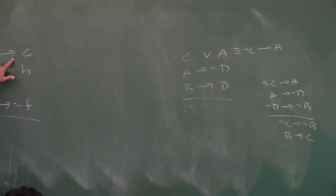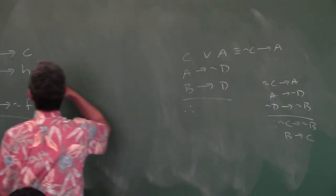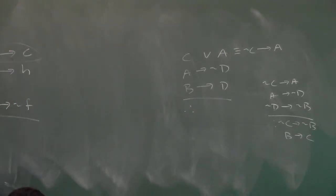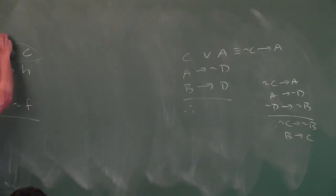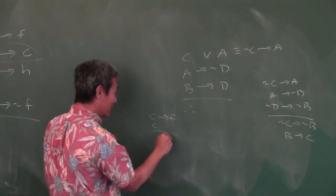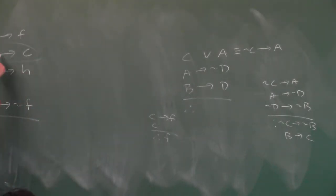When you have a bi-conditional statement, the arrow points both directions, meaning you can use it whichever direction you want. So you have to figure out which way to use it. We'll use C implies F — because we have C given, so by modus ponens: C implies F, C, therefore F.